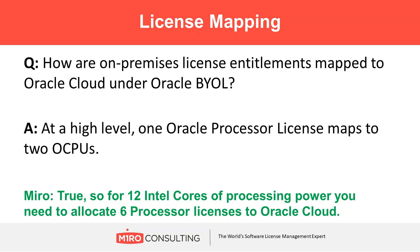License mapping. This is true — how on-premise license entitlements are mapped to Oracle Cloud under Oracle BYOL. At a high level, one Oracle processor license maps to two OCPUs. For performance purposes, if you had 12 Intel cores of processing power to allocate to the cloud, you need to allocate six processor licenses, because you're equating a single hyperthreaded Intel core to a single OCPU. That's key to understand.